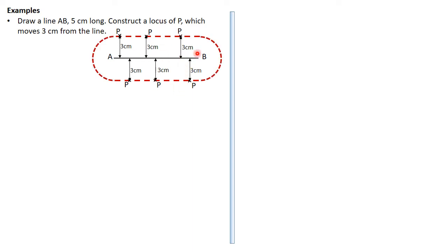The point P could also form a curve, so you could stand with your compass and move to form a semicircle. The reason is any point on that semicircle is just three centimeters from the endpoint B, and B is a point on the line AB, so it qualifies as part of the locus of P.